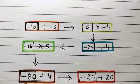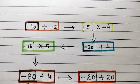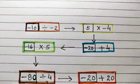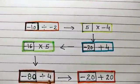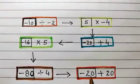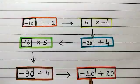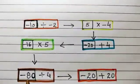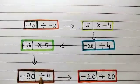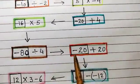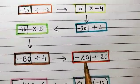Whenever this minus 80 or negative 80 is divided by positive 4, you will be getting negative 20. That is, whenever a negative integer is divided by a positive integer, you will be getting a negative integer.